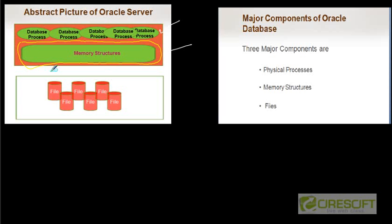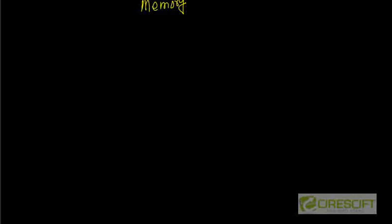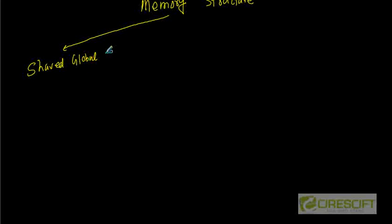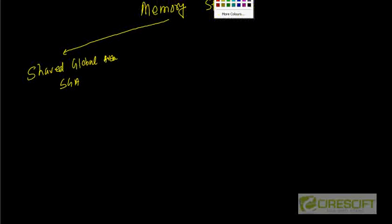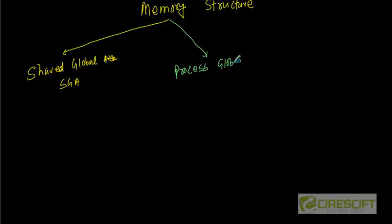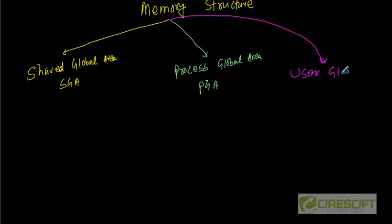The memory structure shown here consists of three parts. The first one is called Shared Global Area, or in short SGA. The next one is called Process Global Area, or in short PGA. And the third one is called User Global Area, or in short UGA.